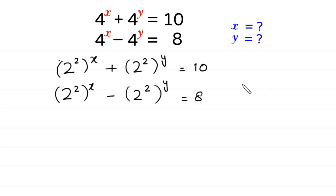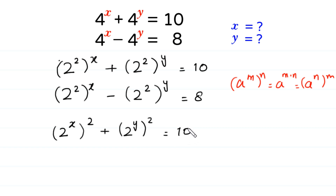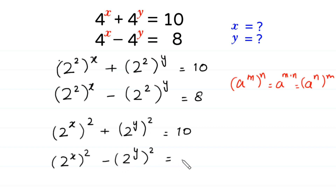Now, according to the property of exponents, a to the power m, whole to the power n, is equal to a to the power m times n. We can write the power x inside the brackets and power 2 outside, giving 2 to the power x, whole to the power 2, plus 2 to the power y, whole to the power 2, is equal to 10. In the second equation, 2 to the power x, whole to the power 2, minus 2 to the power y, whole to the power 2, is equal to 8.